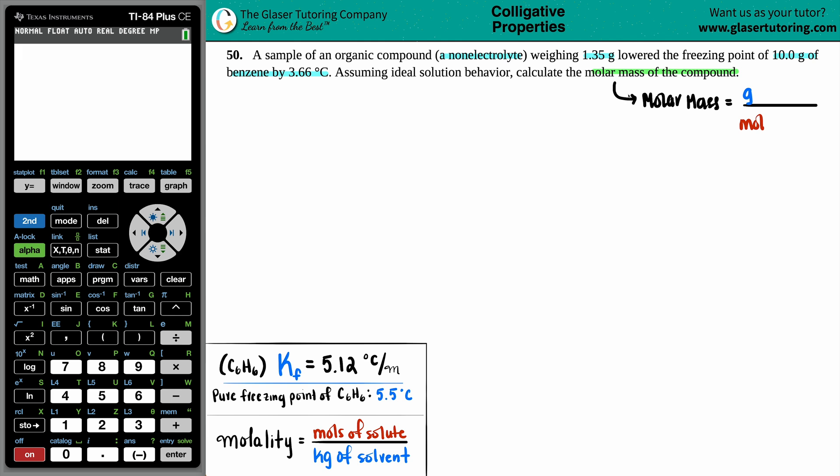Generally, a molar mass is of one compound, one molecule, one element, and here we're dealing with a compound. So we know that we're going to take the grams of the compound in this problem and divide it by the moles of that compound.